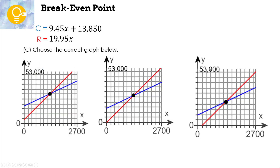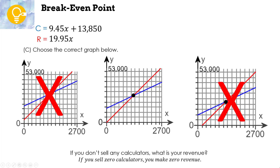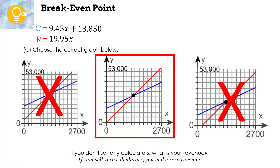Choose the correct graph. If we make and sell zero calculators, the revenue is zero — so the first graph, where revenue doesn't start at zero, cannot be correct. The third graph also doesn't make sense. So the answer is the middle graph.